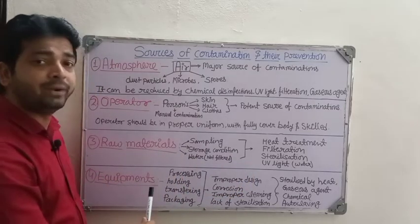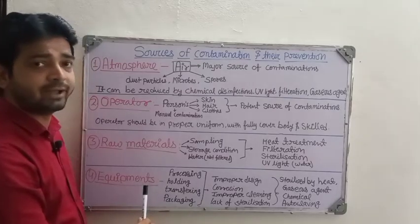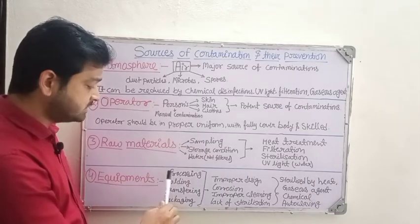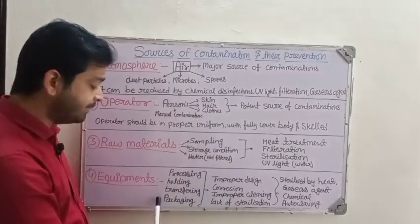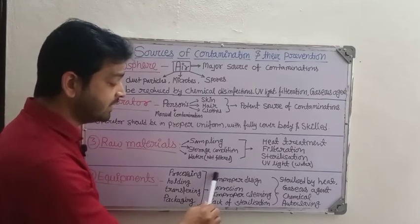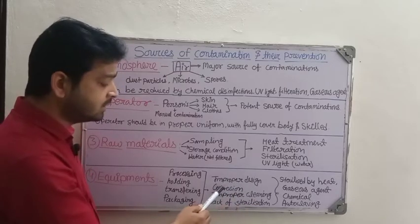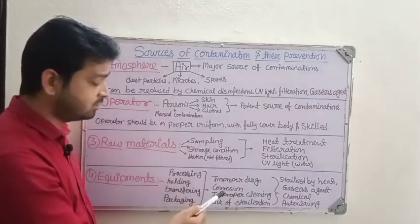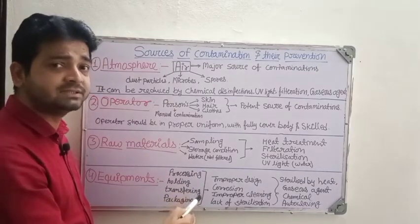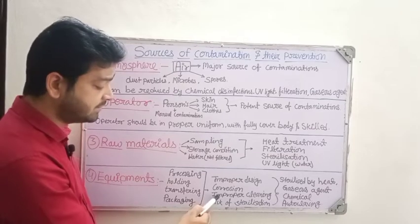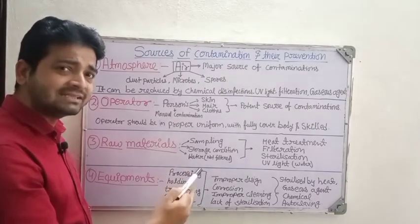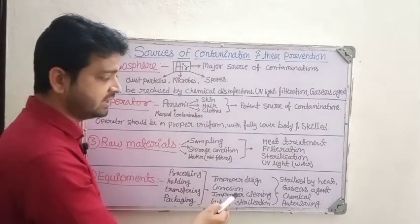The fourth source is equipment. Different equipment used in the microbiology lab — for processing, holding, transferring, and packaging — may contain different types of microbes and biological material that can cause contamination. This can occur due to improperly designed equipment, old equipment with corrosion from moisture, improper cleaning on a daily, weekly, or monthly basis, or lack of sterilization by chemical disinfection or gaseous methods.